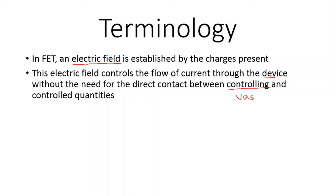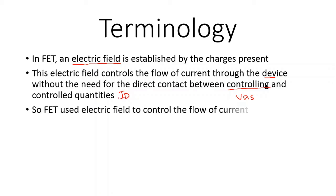The controlling parameter is VGS, which is the gate-to-source voltage, and the controlled parameter is the current ID, the drain current. This established electric field controls the flow of current through the device, and that is why it is called the field effect transistor — because the FET uses an electric field to control the flow of current.